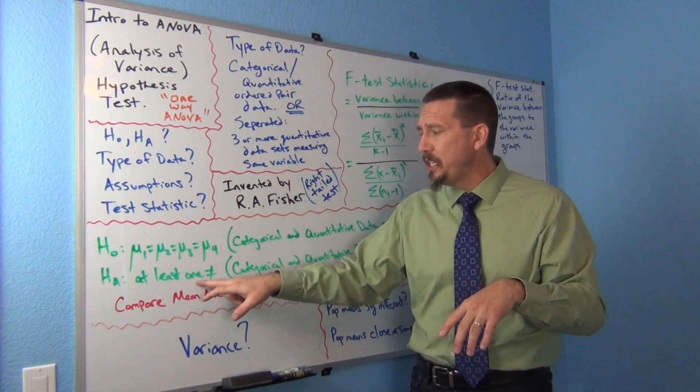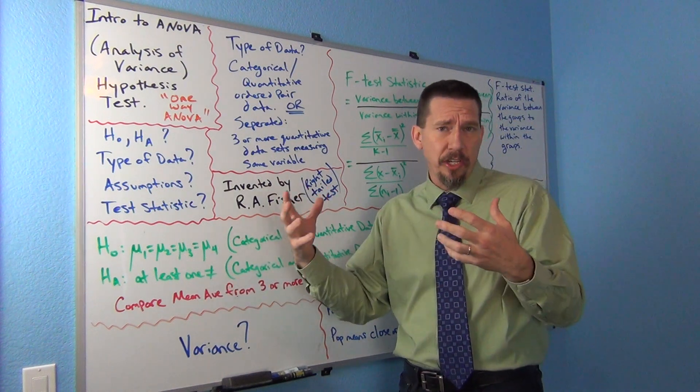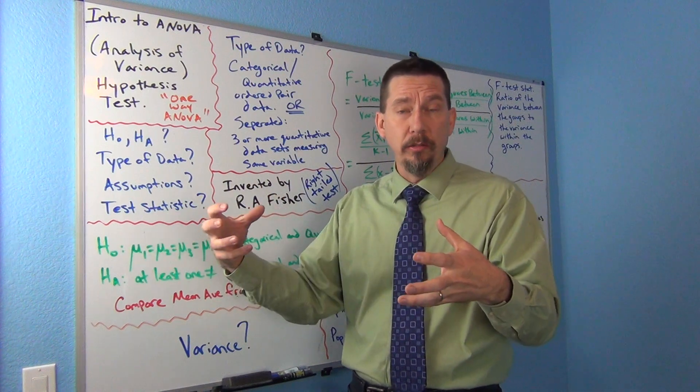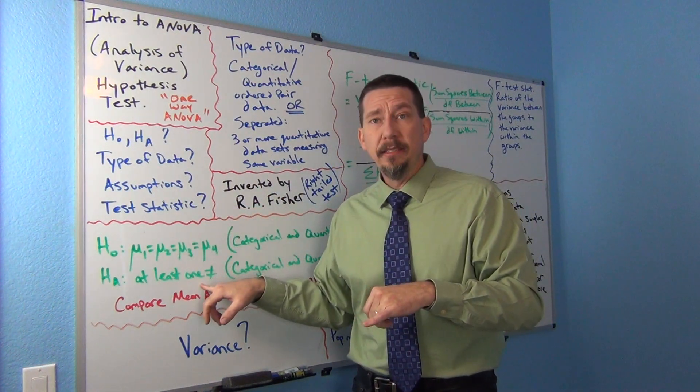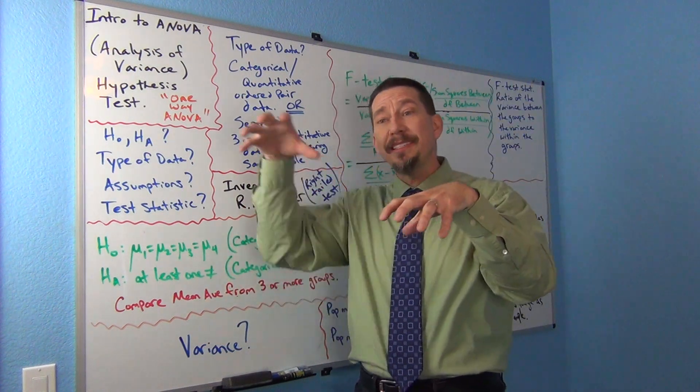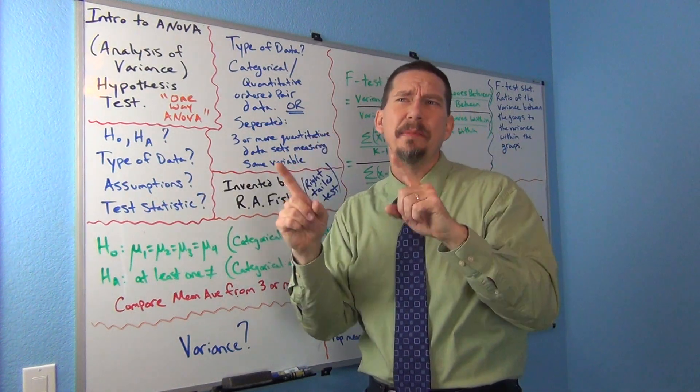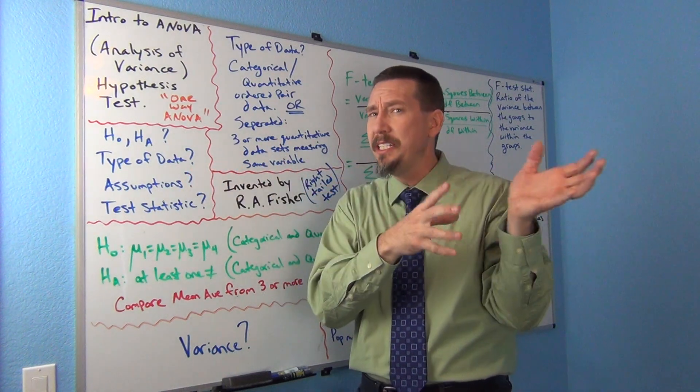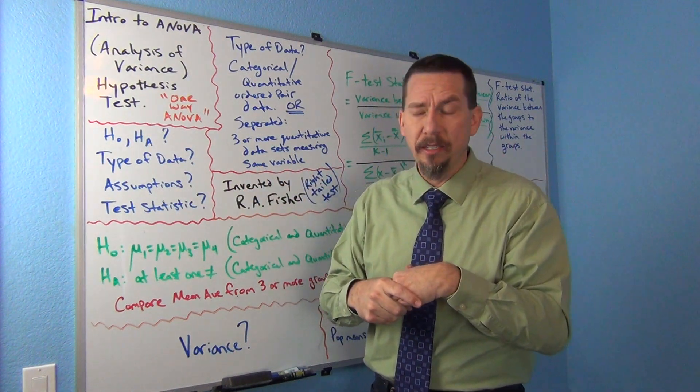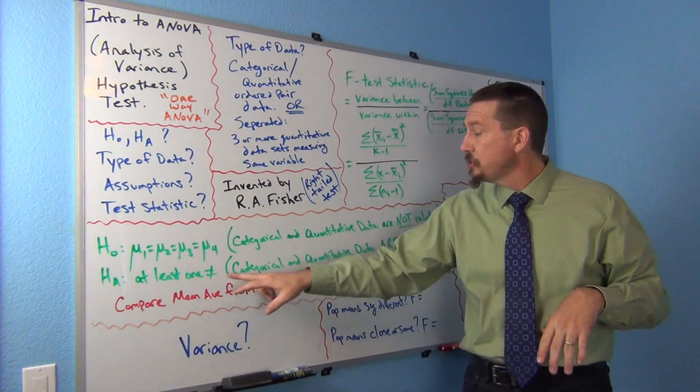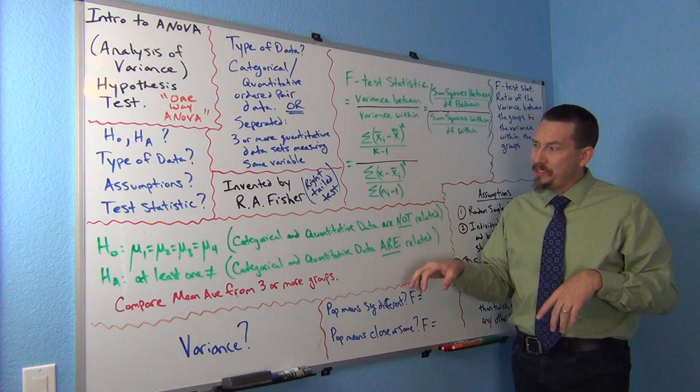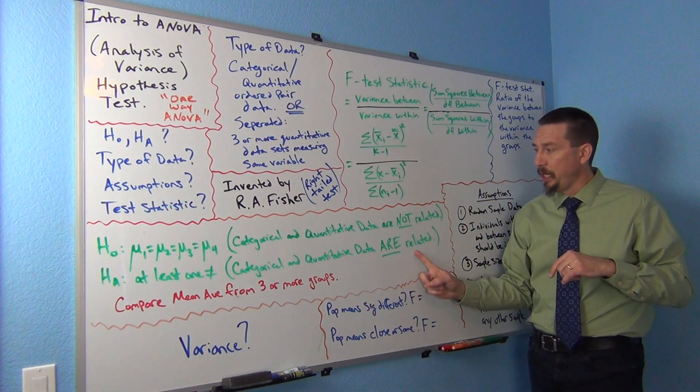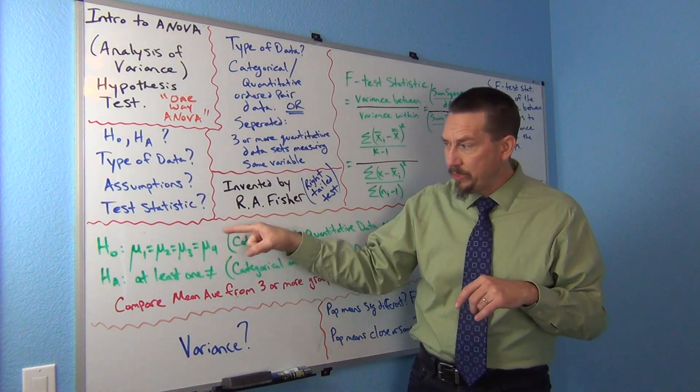But what if at least one is not equal? What if one of the group's mean average is very different than the other? Well, that would tell me it does matter. The grouping does matter. It does matter what group you're in. So if that's the case, then the categorical variable that's deciding the group is somehow related. That's a good way to think about it in your head. Does it matter what group I'm in or what population I'm in? Do I always get about the same thing, no matter what population I'm in? Or do I get something different, depending on what population the person or object is in? So at least one is not equal actually implies they are related. So the null hypothesis, the categorical and quantitative data are not related. Alternative categorical and quantitative data are related.